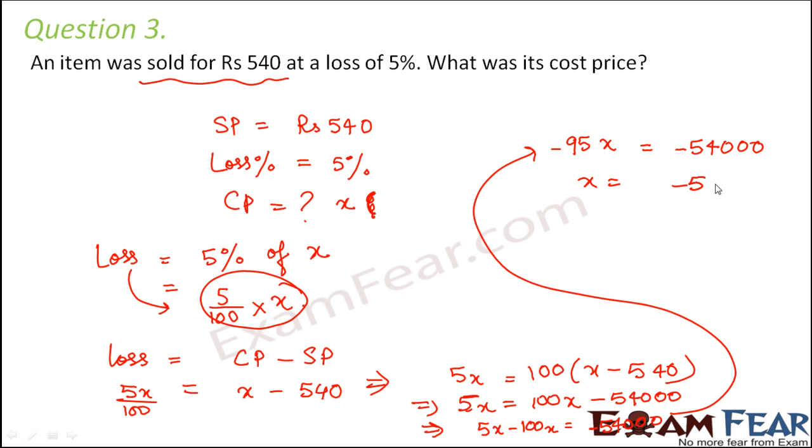Or X would be equal to minus 54,000 divided by minus 95. So a negative integer divided by a negative integer gives a positive integer. And when you actually divide this, you get this value as rupees 568.42. Therefore, the cost price of the item would be rupees 568.42.